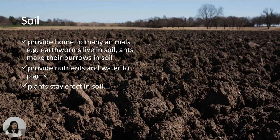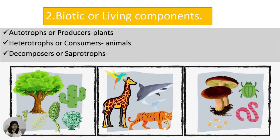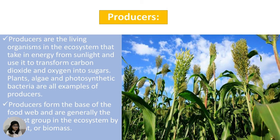Biotic or living components: Autotrophs or producers, heterotrophs or consumers, and decomposers. Producers are the living organisms in the ecosystem that take energy from sunlight and use it to transform carbon dioxide and oxygen into sugars.